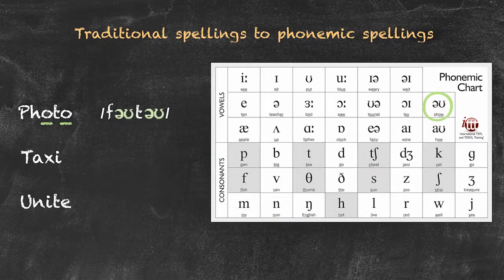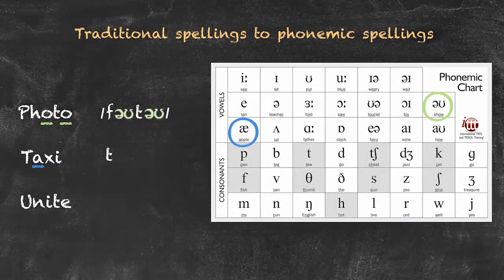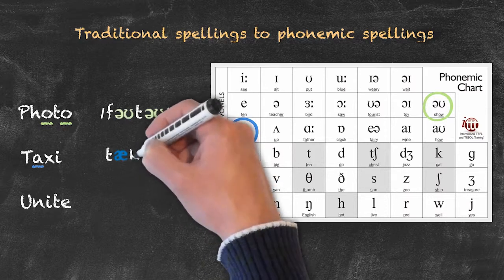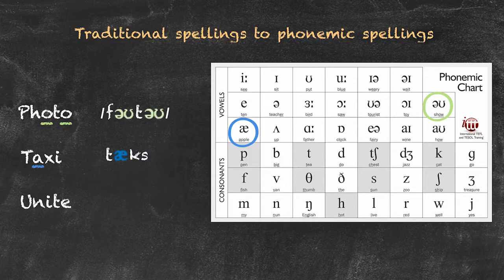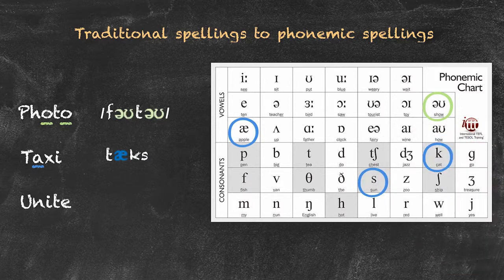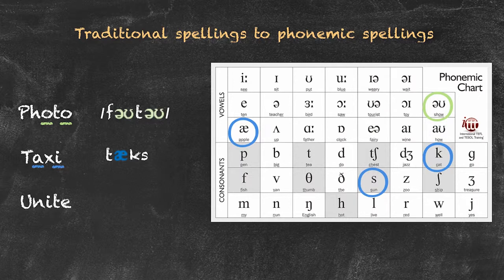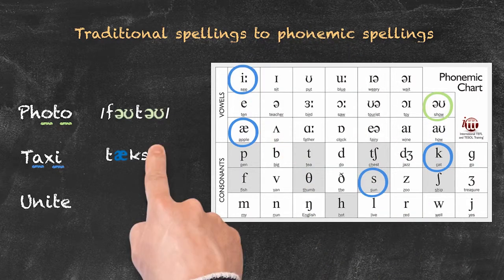Now we have 'taxi.' We have 't' as the first sound, then we have 'ah,' and we have to locate the vowel — and now we have the 'ah' symbol. The x here actually has two phonemes, the 'c' and 's.' So we look at the 'c' and 's' phonemes. And the last phoneme there is 'e,' as in the long 'i' sound. Taxi.